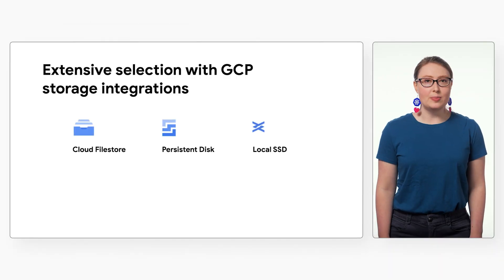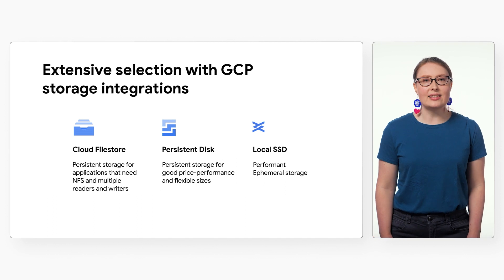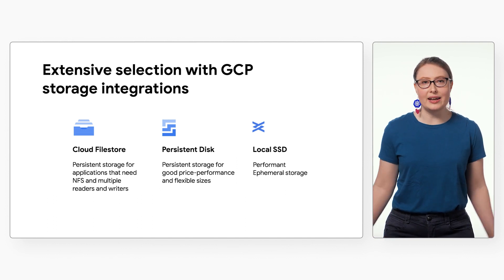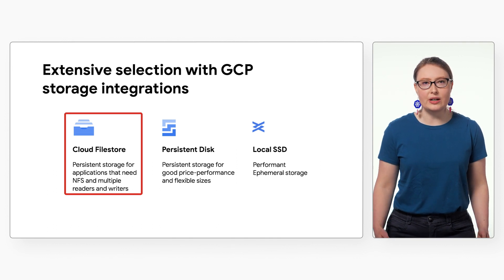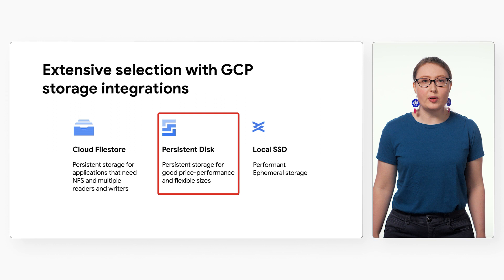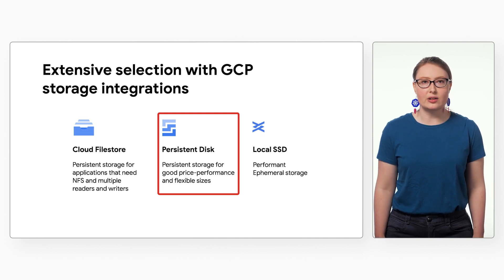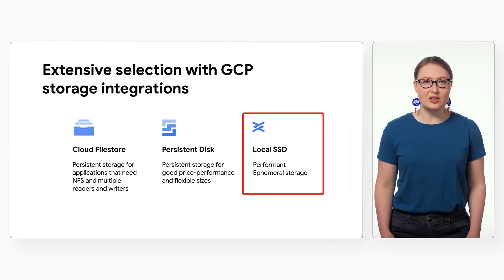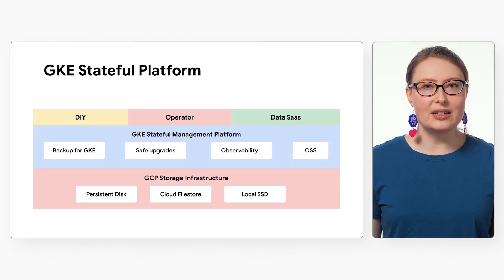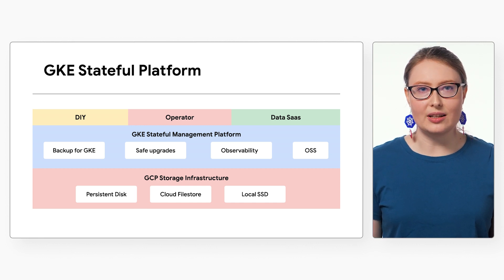When it comes to making sure your Kubernetes workloads have the storage they need, GKE has a number of options to fulfill a variety of needs. For NFS, Cloud Filestore can provide persistent storage for multiple readers and writers. GKE also provides options for configuring persistent disks for your cluster with flexible sizes. And for those workloads that need high performance at very low latency, you can configure locally attached SSDs for the workloads in your GKE clusters. From backups to upgrades to configuring storage to suit your needs, GKE provides an ecosystem of solutions to support the challenges of running stateful workloads in Kubernetes.